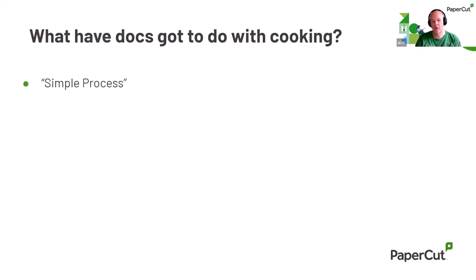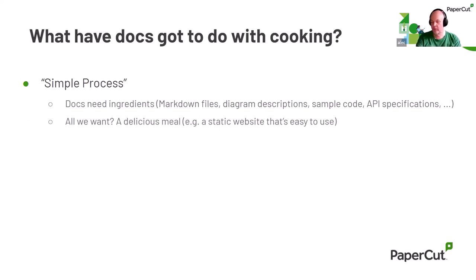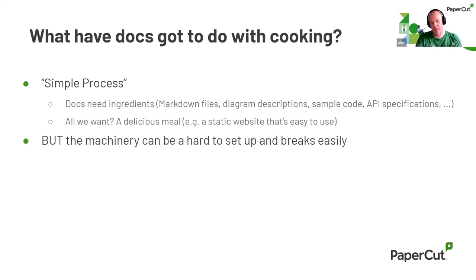You can think about cooking and documentation the same way — it's conceptually a simple process. You need ingredients: for us it's things like reStructuredText or Markdown, descriptions of diagrams, sample code. At the end of the day, all you want to do is publish that, whether through a static website, a PDF, or online help. But getting from those inputs to the final product is quite hard because of the tools, setting them all up in a pipeline. They can break quite easily once somebody makes a change to their workstation. You want something that just works.